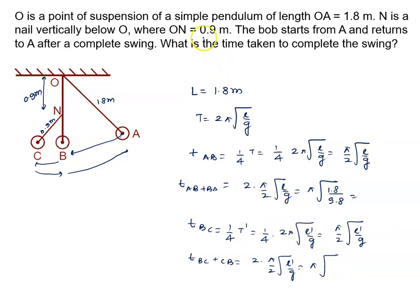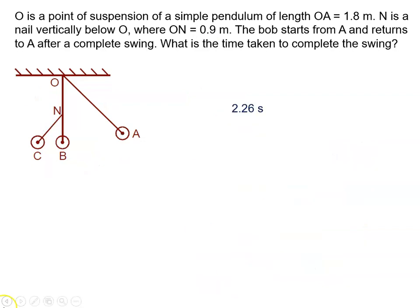Now the length is half because at 0.9 the nail is there, so it's 0.9 upon 9.8. You will solve this, solve this, and sum both of them. After getting the solution you will get the right answer, which is 2.28 seconds. So this is the answer to this problem.